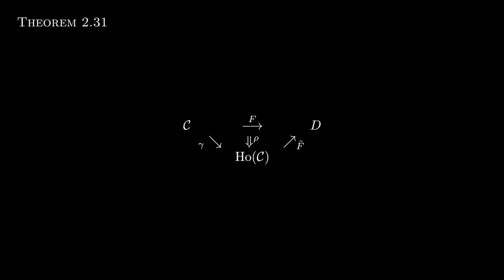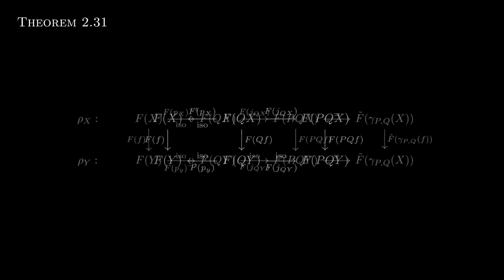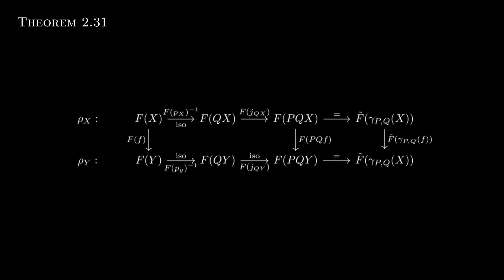It remains to show there is a natural isomorphism rho. Apply F to the commuting diagram from before; the morphisms that were weak equivalences are sent to isomorphisms by assumption. Define rho at X to be the map from FX to FPQx on top — reversing the first isomorphism from FX to FQX, which we can do since it is an isomorphism. This diagram exhibits the desired natural isomorphism, and because it is an isomorphism and not just a homomorphism, we are done.